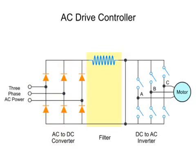The intermediate circuit acts as a filter and consists of a DC bus and associated circuitry. This stage of the wave conversion serves to stabilize and smooth the pulsating rectifier output to generate a constant DC voltage.